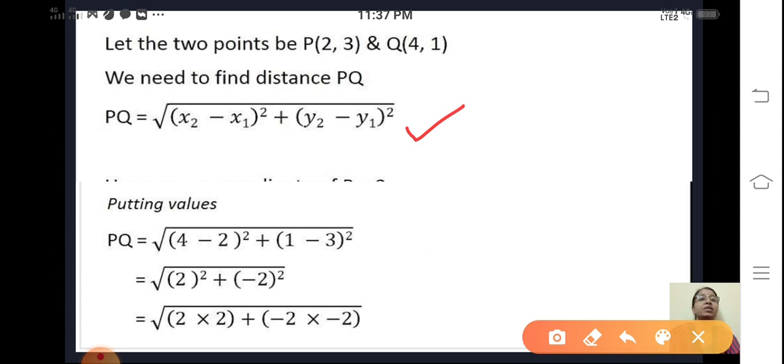Then what we do? We have x1, y1, x2, y2 with us. So let's substitute the value, then simplify it. After simplification, we will get, let me simplify further.